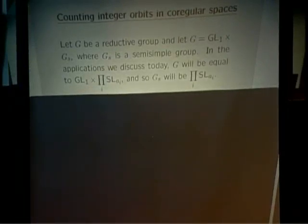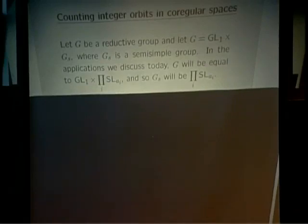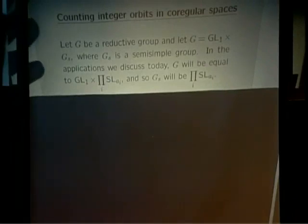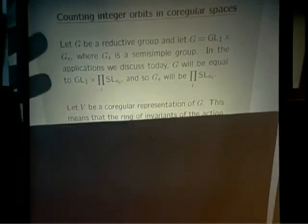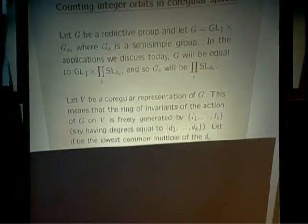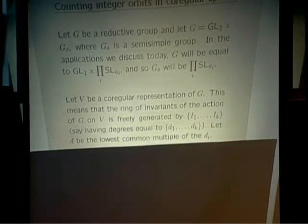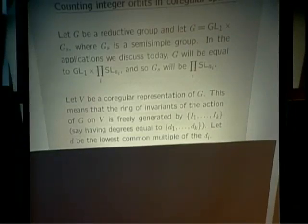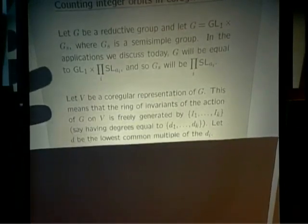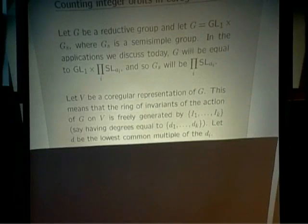Suppose G is a reductive group, and GS denotes the semisimple part. For us, GS will be a product of SL's, and G will be a product of GL's and SL's. We take a co-regular representation V of G — meaning the ring of relative invariants is freely generated by invariants I_1 through I_k. These invariant polynomials have degrees D_1 through D_k. Let D denote the lowest common multiple of the D_i, the degrees of the invariants.